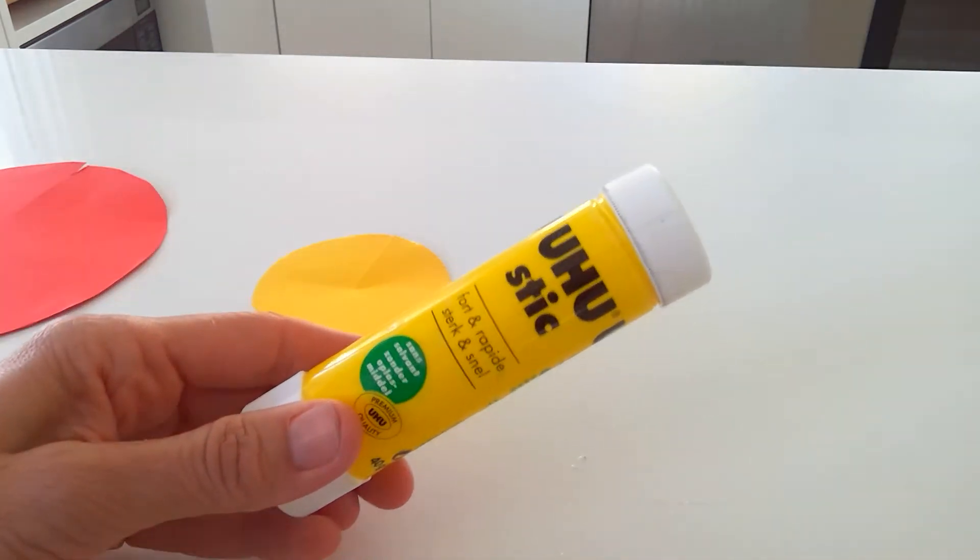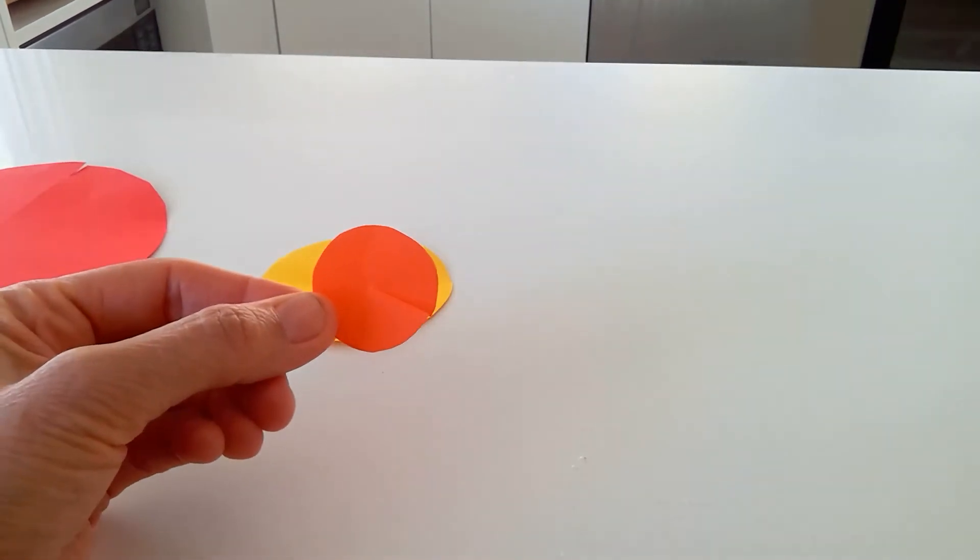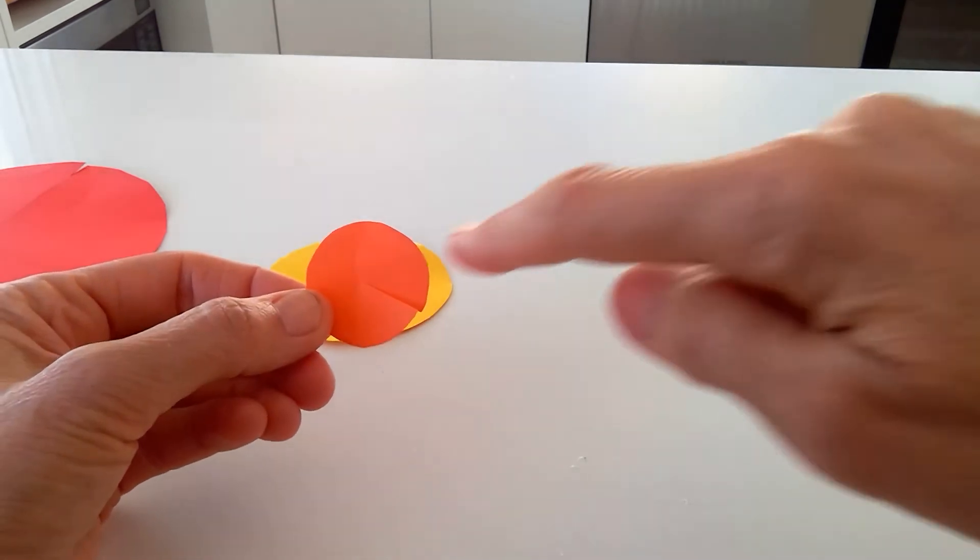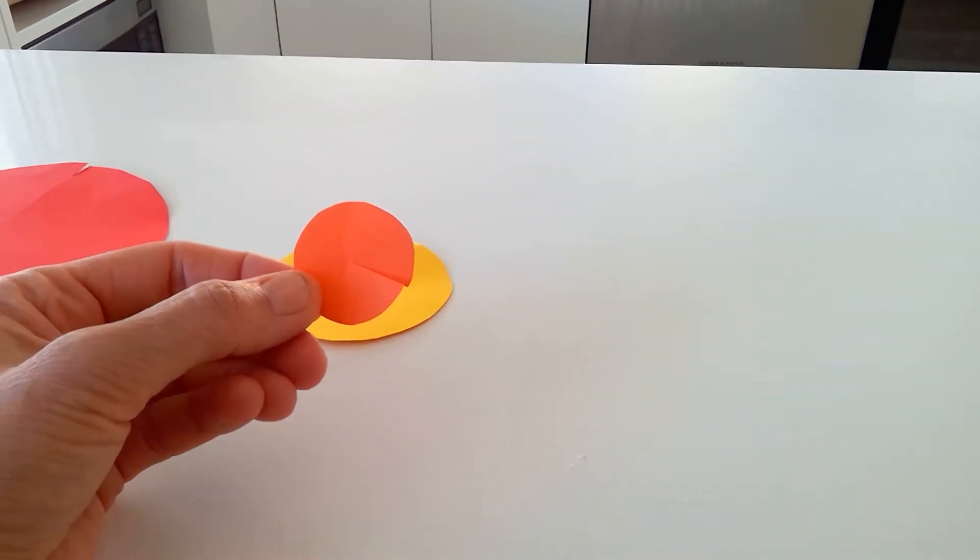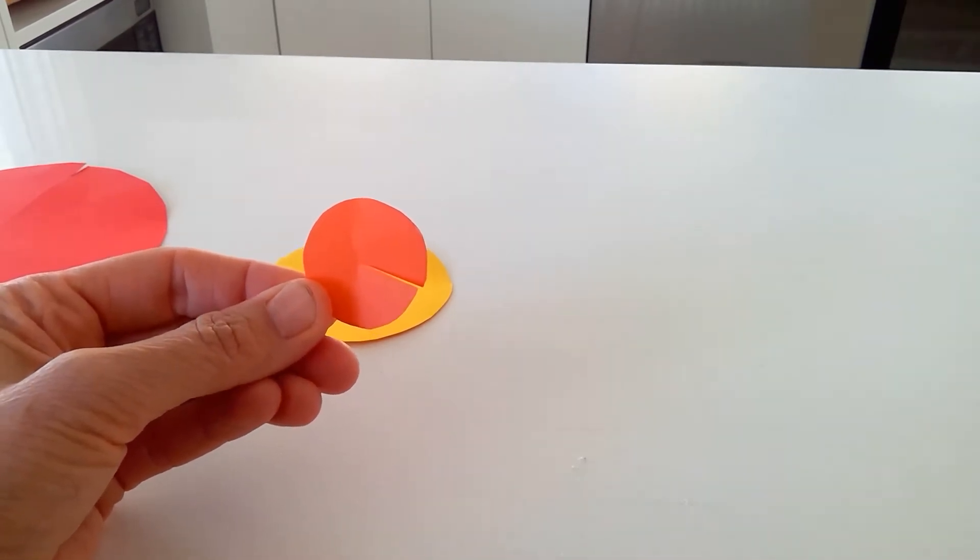I then took the lid of a glue stick, traced onto orange cardboard, drew a line to the centre of the circle, cut along the line and cut out the circle like so.